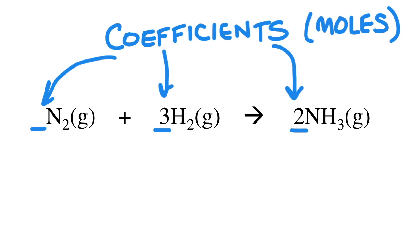Moles are the SI unit for the amount of a substance. In this equation, one mole of nitrogen gas reacts with three moles of hydrogen gas to produce two moles of ammonia.